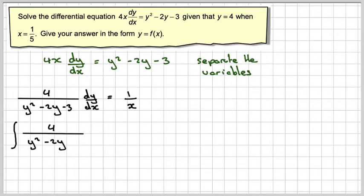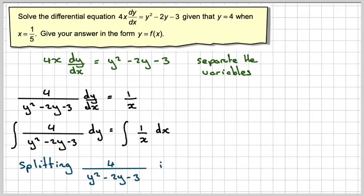If we integrate with respect to x on both sides, the dx here becomes dy, and this becomes the integral of 1 over x dx. We need to split this now into partial fractions.